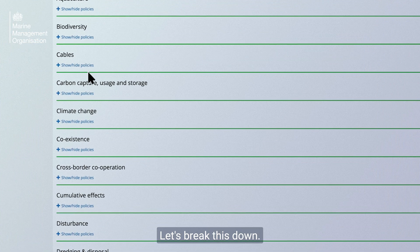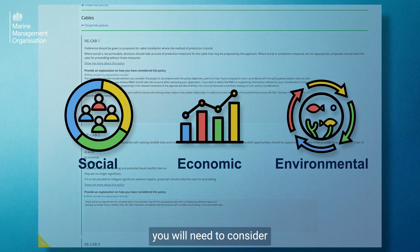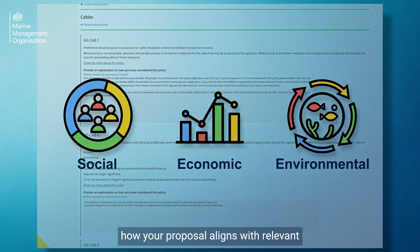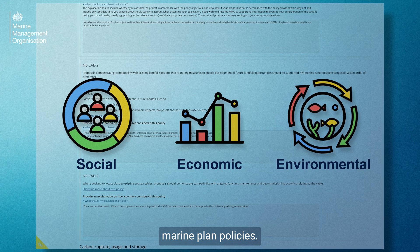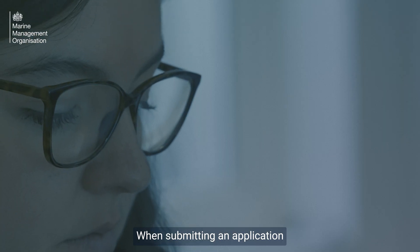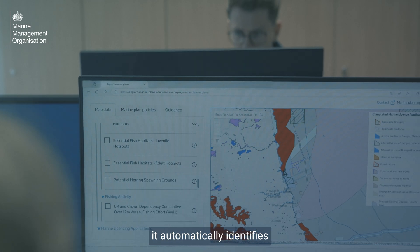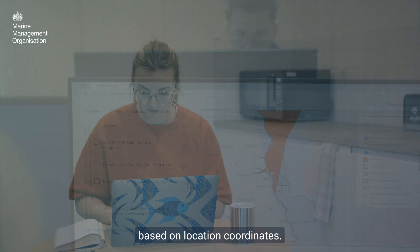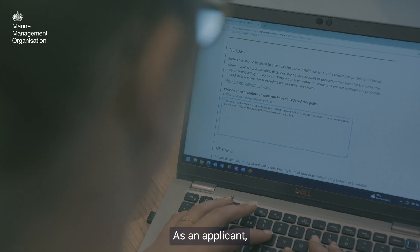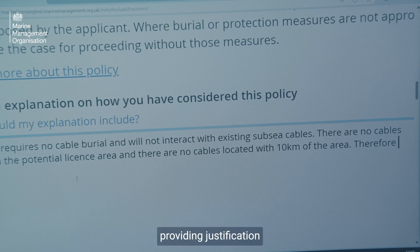For a Marine Licence application, you will need to consider how your proposal aligns with relevant Marine Plan policies. When submitting an application through the Marine Case Management System, it automatically identifies applicable policies based on location coordinates. As an applicant, you must then complete the Marine Plan Policy Assessment, providing justification and supporting evidence.